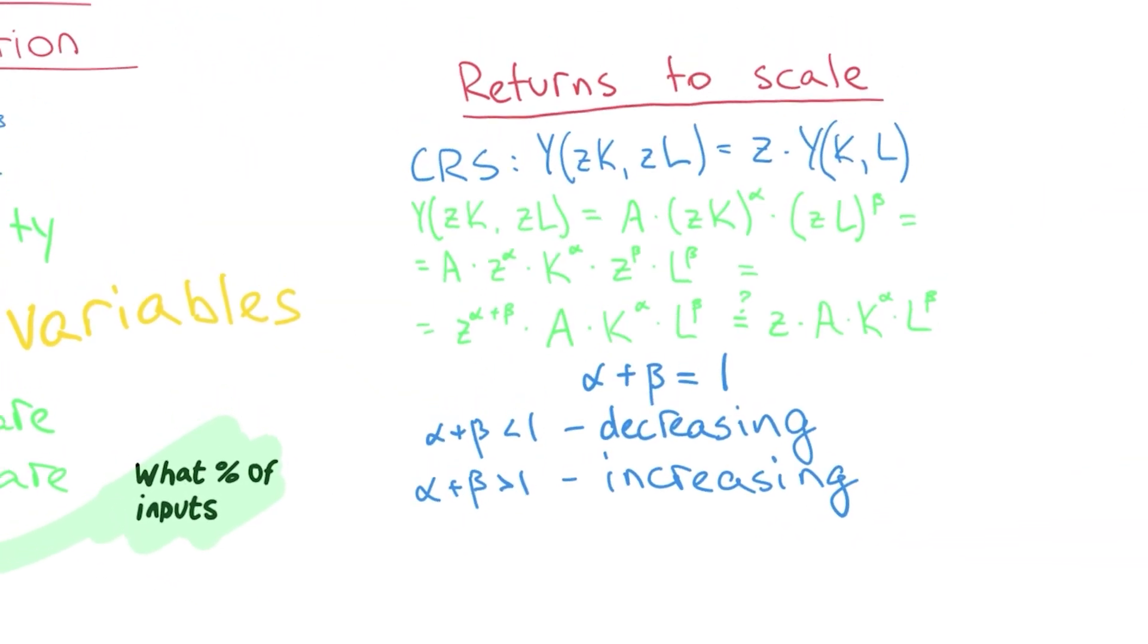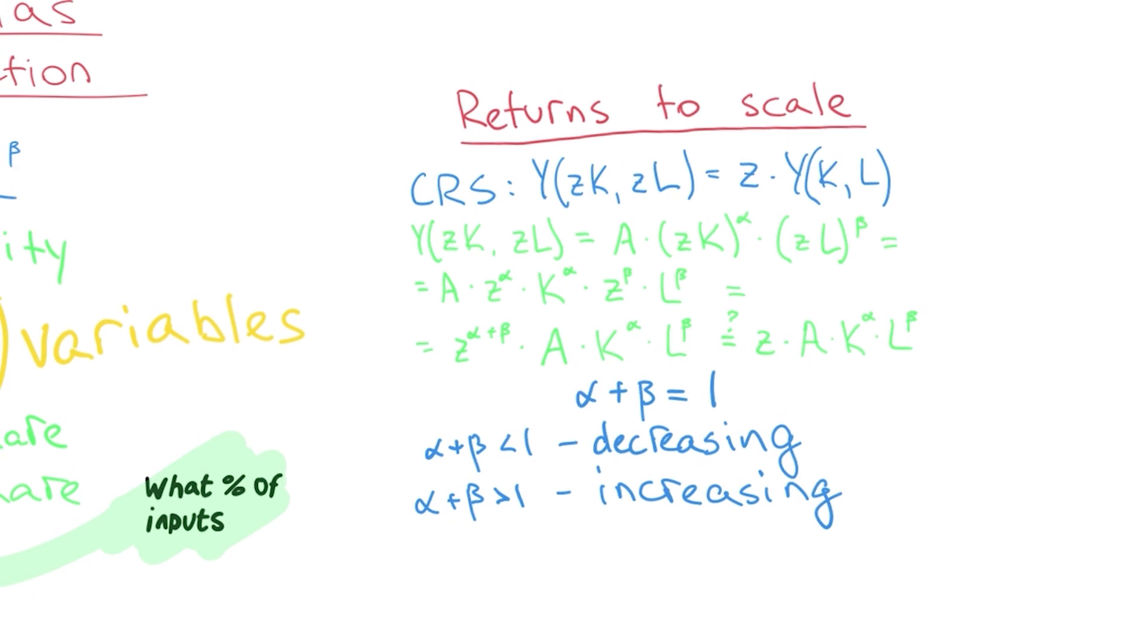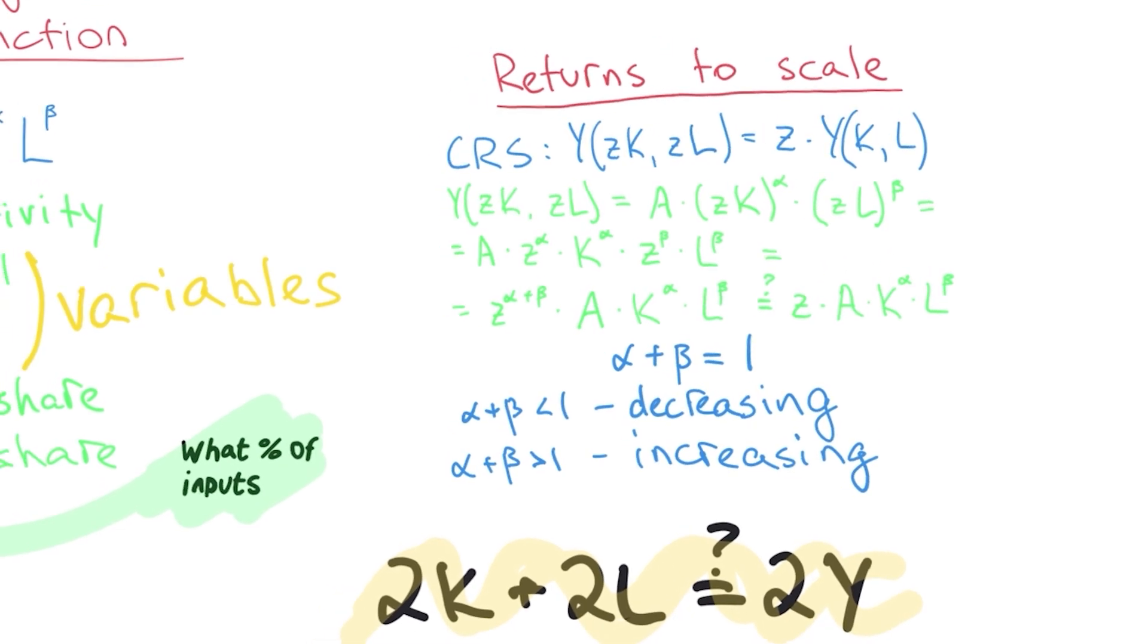Another important thing is something called returns to scale and it pretty much means that if we double both our inputs do we double the output? So in other words, CRS is the big one, it's called constant returns to scale. So it means that it's proportional. If we multiply each input by some number, in our case Z, and it can be any number as long as it's above zero.